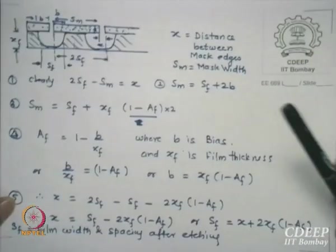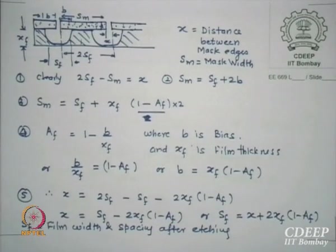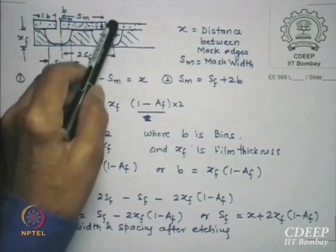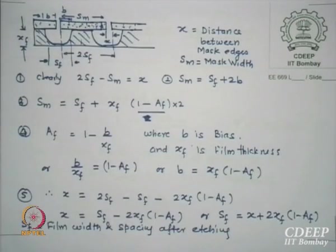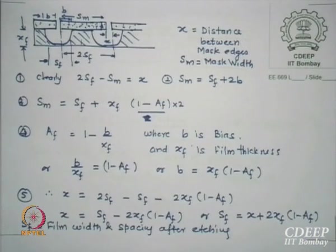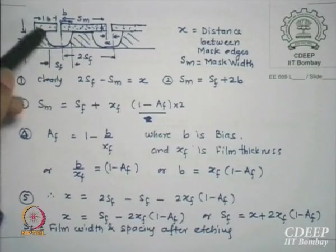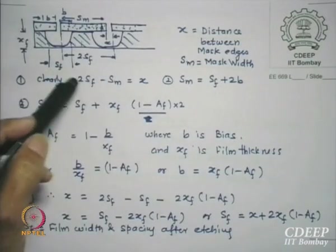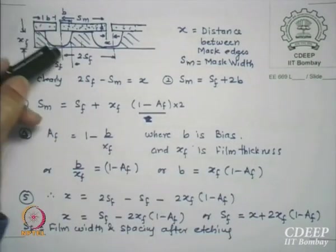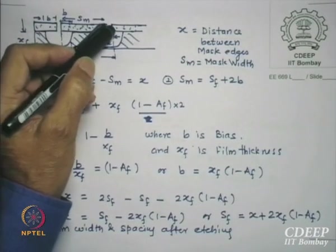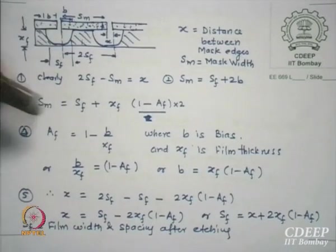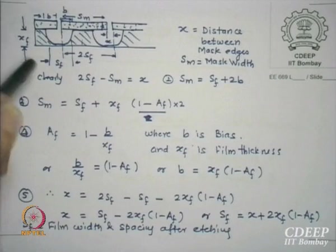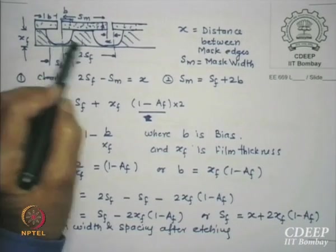This is given in Plummer's textbook so you may look at it later. Here is what the pattern looks like. SM is the mask size you want to etch below. There is another mask area, and in between is the distance X which is going to be etched — between the mask edges. We now define some terms. If this is my etch profile on both sides of X, I define the term SF as the film width taken from edge of one mask to the edge of the other mask — called pitch. From this point to this point is 2 SF. SF is the film thickness shown here.